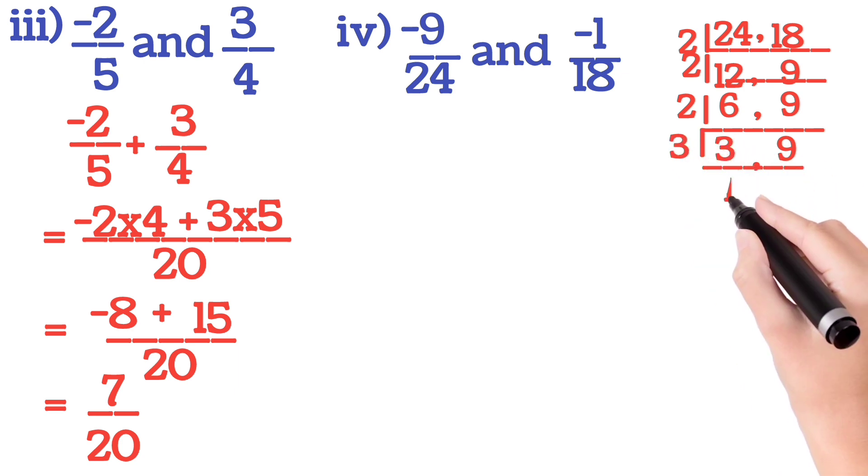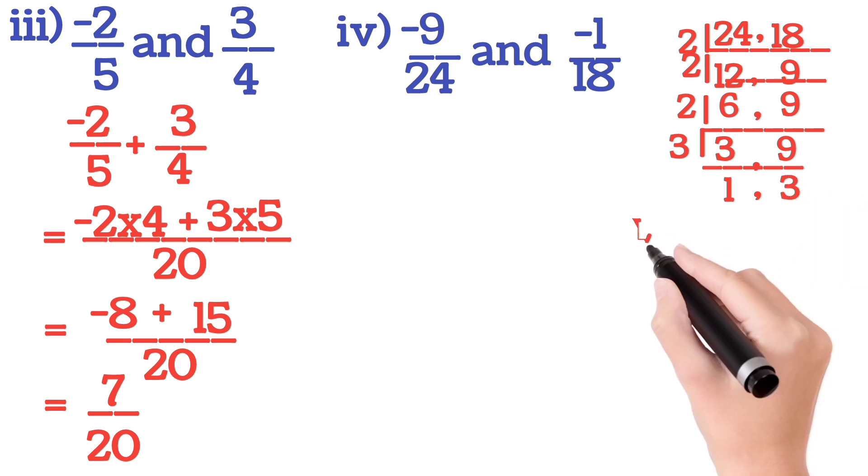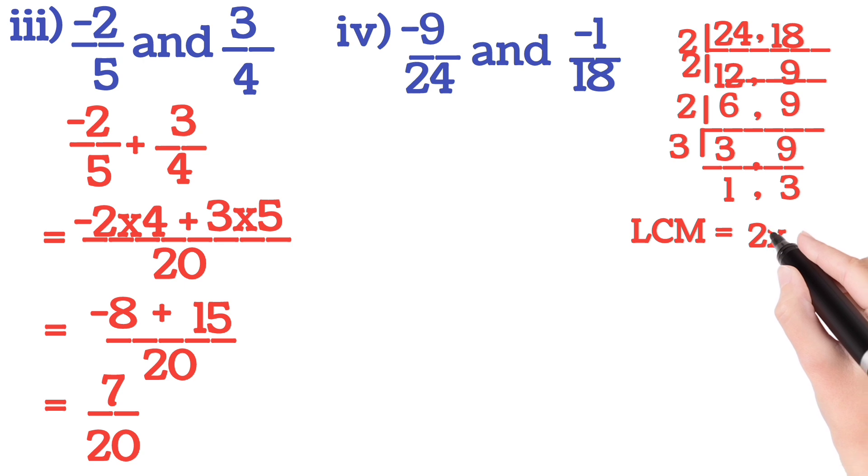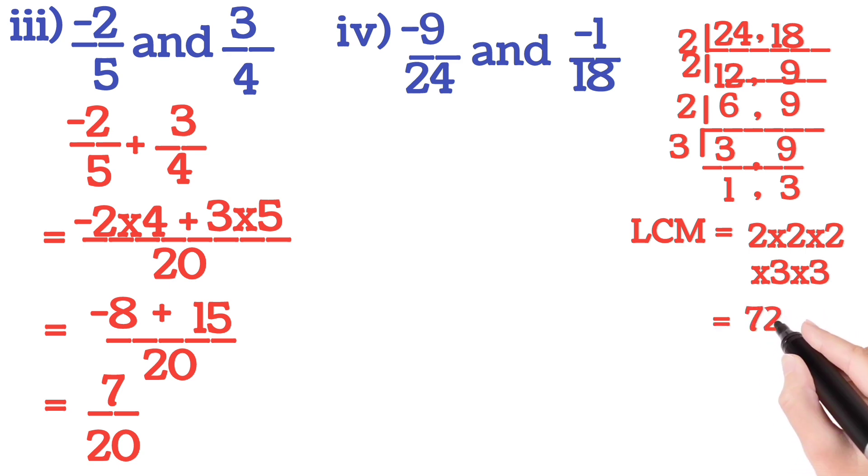Both are now divisible by 3. So 3 1s are 3 and 3 3s are 9. Now we will calculate the LCM. Now we will calculate the LCM: 2 into 2 into 2 into 3 into 3. You multiply all then you will get 72. So our LCM is 72.